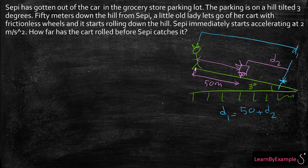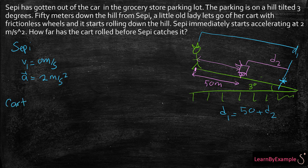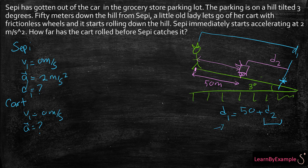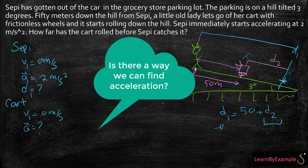I'm going to write my givens separately for Seppi and for the cart. Seppi has an initial velocity of 0 meters per second and starts accelerating at 2 meters per second squared. For the cart, the initial velocity is also 0 meters per second, but I don't know what the acceleration is. What I'm actually solving for is D1, and it looks like the only way I can find D1 is to find D2 first, then plug it into the equation D1 = 50 + D2.